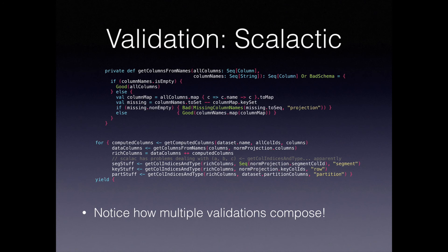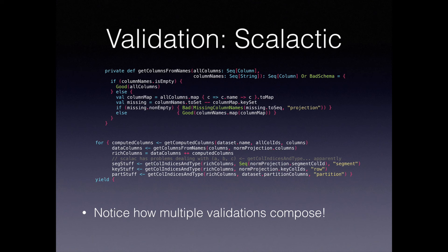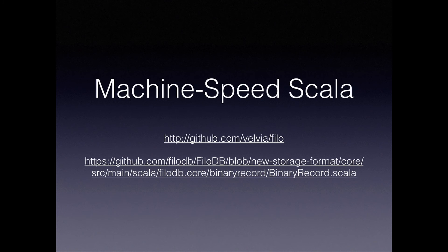A quick note about validation: I'll plug Bill Venners' Scalactic library, which lets you compose validation logic. It gives you a return type of some type A or some error type, and you can compose this all the way down so that at the end you yield the desired result, but if it fails at any stage you can easily get out the error type.